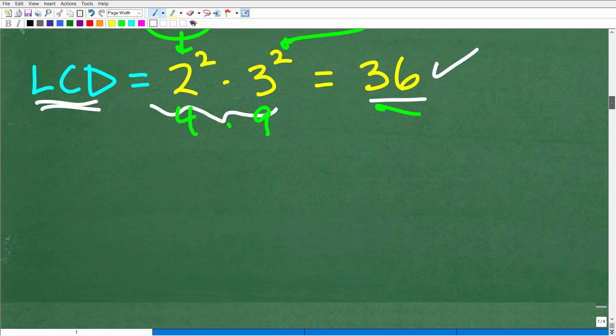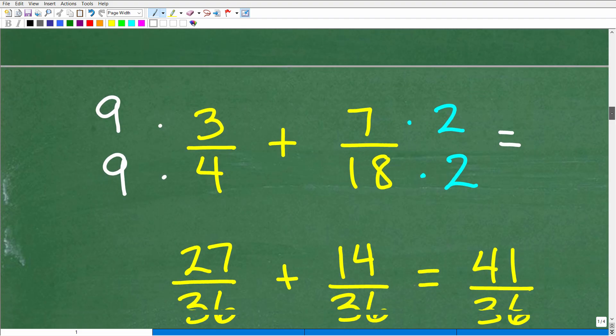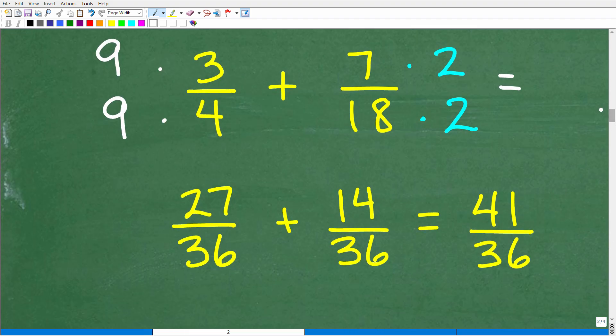So we're going to have to rewrite these fractions such that the denominator is 36. So here we have 4 and here we have 18. So we're going to have to go from a 4 to a 36 and an 18 to a 36. So we're going to have to rewrite the denominator such that the denominator is the lowest common denominator. Let's take each one of these fractions one by one.